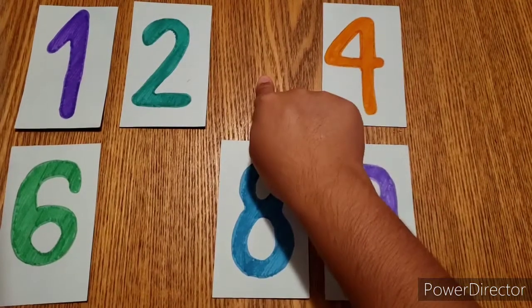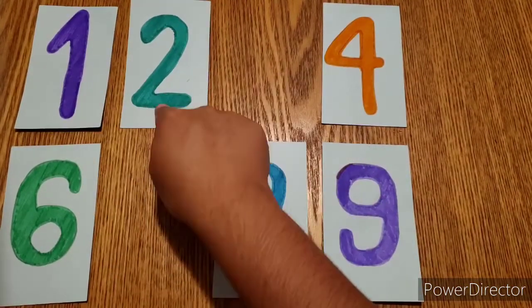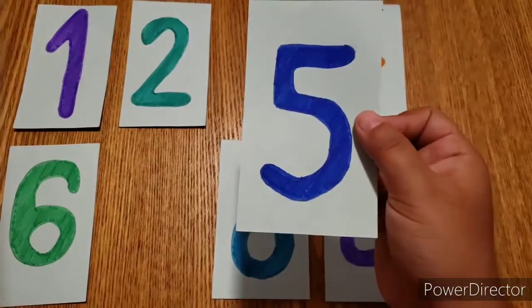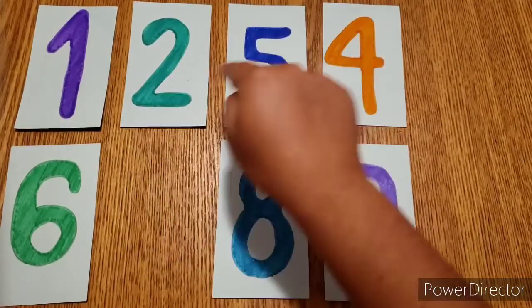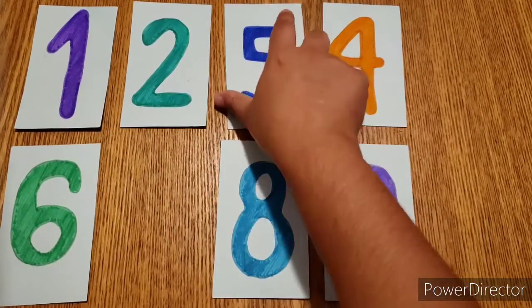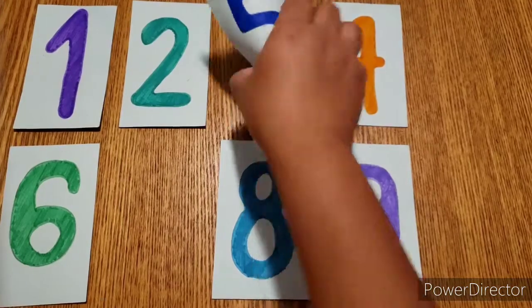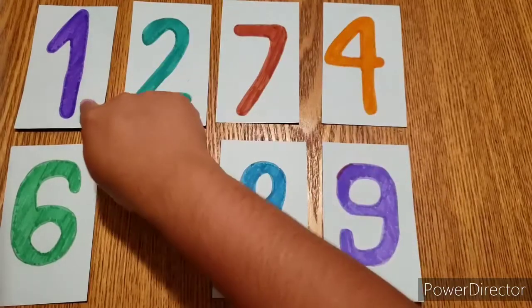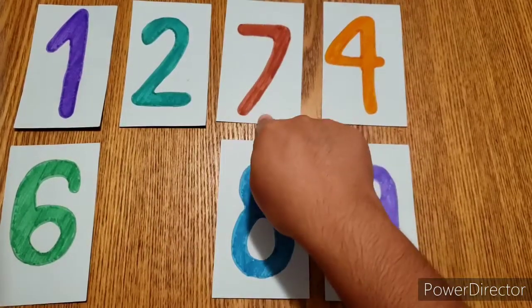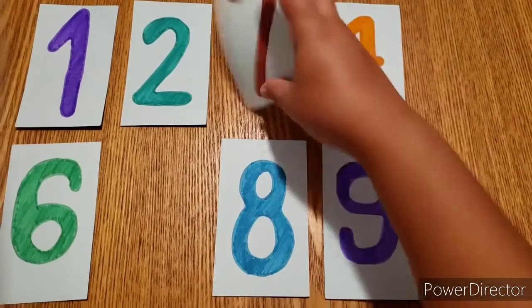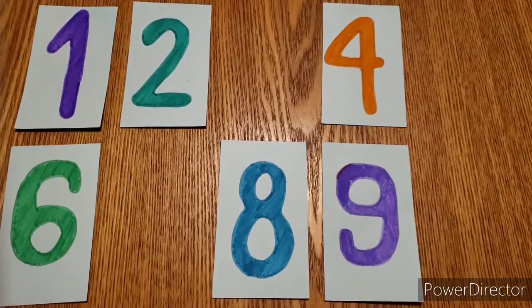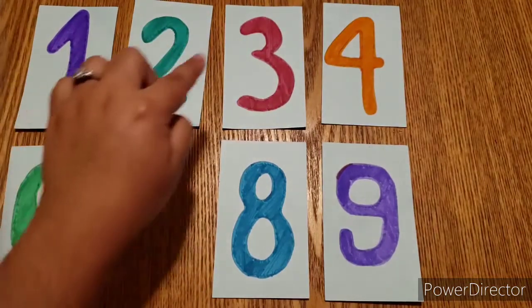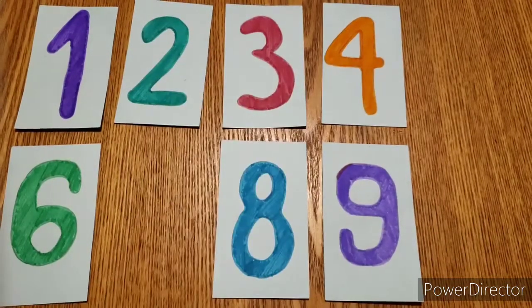So which number goes here? We have one, two, blank. Is it the number five? Is it one, two, five? No. Is it the number seven? One, two, seven? No. Is it the number three? One, two, three, four? Yes, number three goes there.